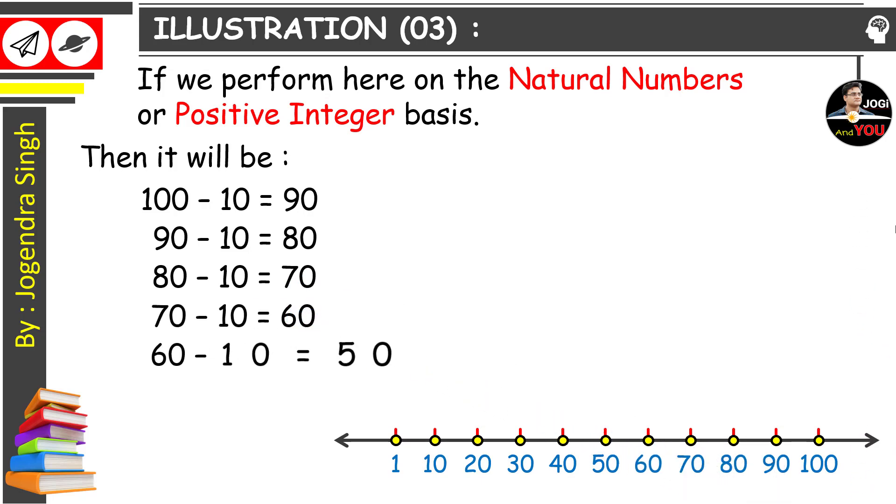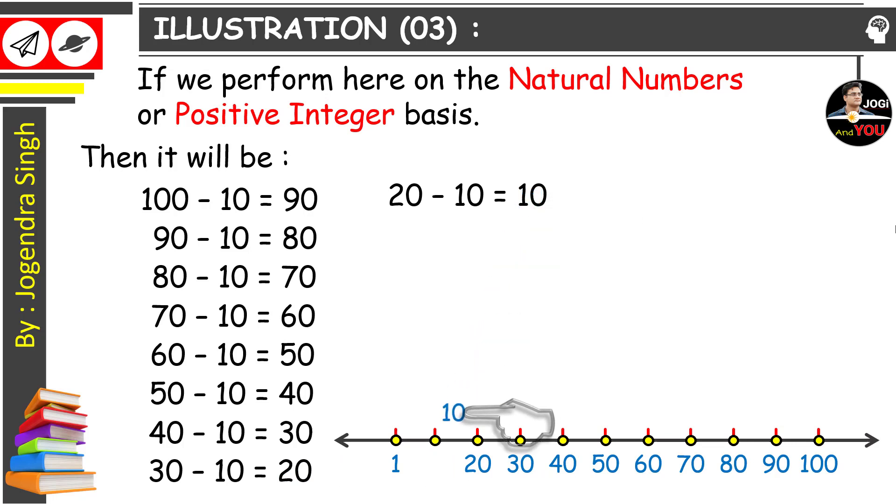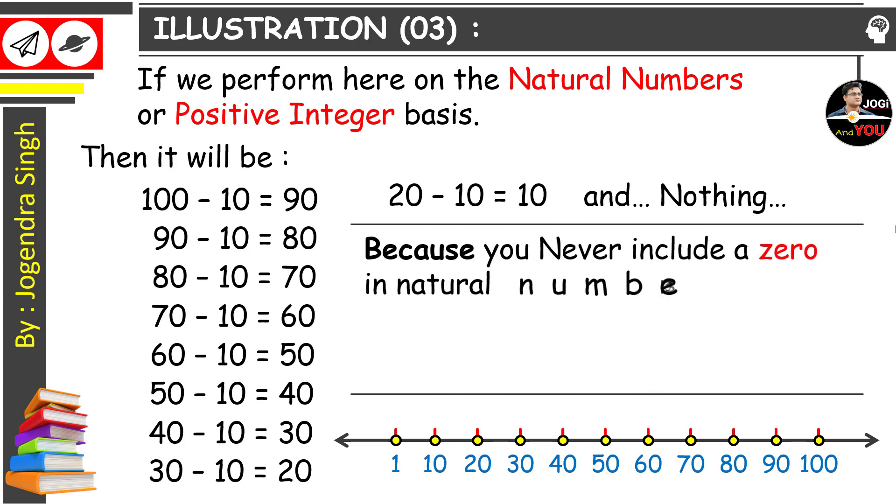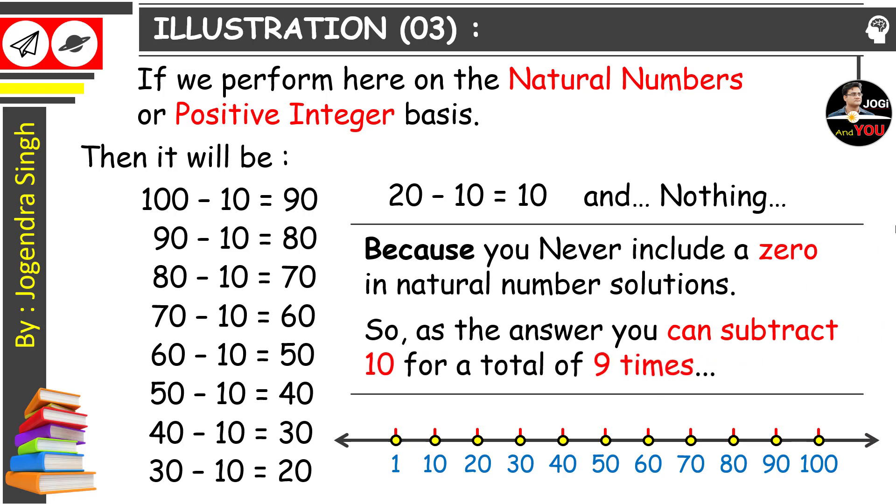60 minus 10 equals 50. And 50 minus 10 equals 40. Now 40 minus 10 equals 30. And then 30 minus 10 equals 20. And this is 10. And now we have nothing to do, because you never include a 0 in natural number solution. So as the answer, you can subtract 10 from a total of 9 times if it's a natural number line or positive integer number line.